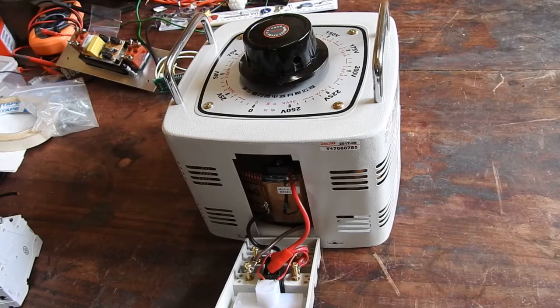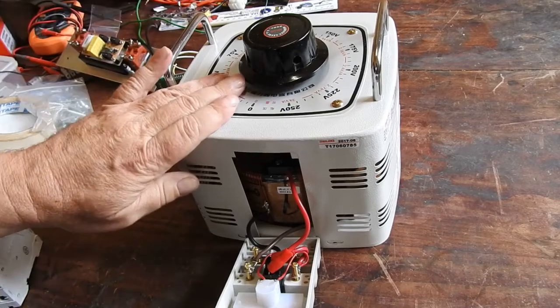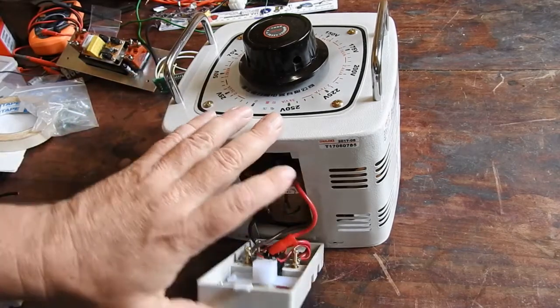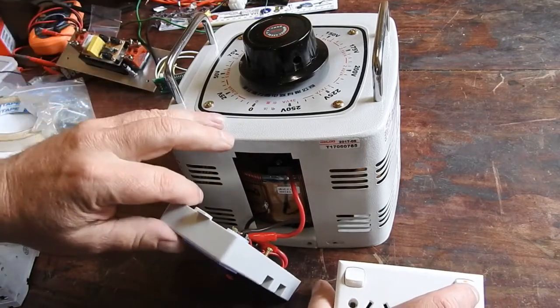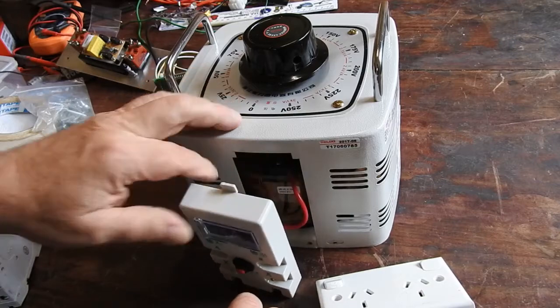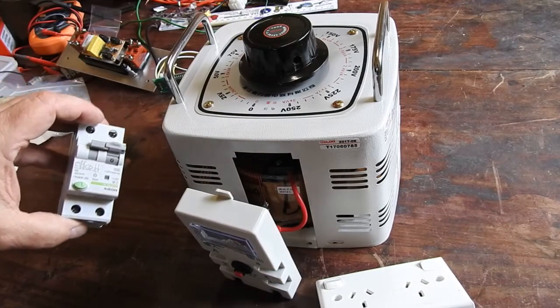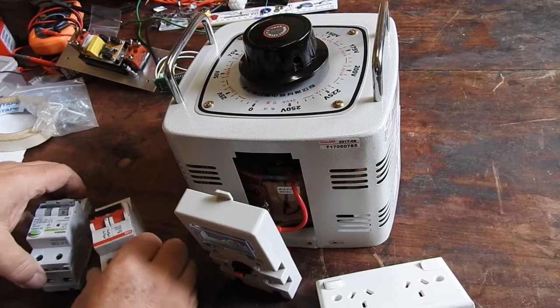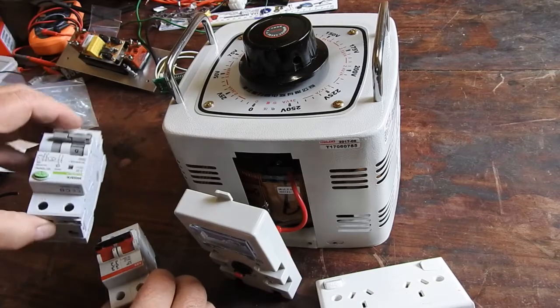So this is part two of my VARIAC upgrade project. The aim is to take this VARIAC and give it an output socket and an IEC input socket, which previously just had terminals, but also to add a safety switch and a circuit breaker, although that's not really needed because this is a circuit breaker as well as a safety switch.